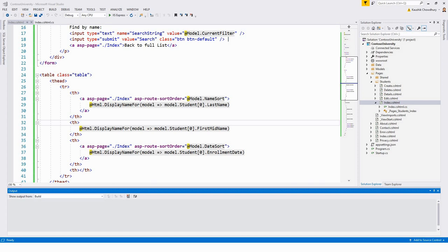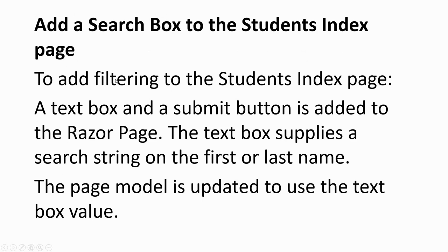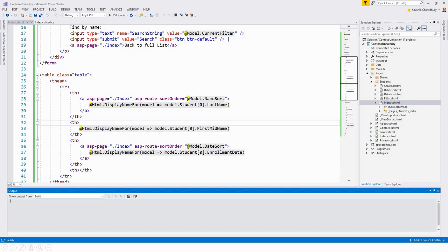Next we'll add a search box to the student index page. To add filtering, a text box and a submit button must be added to the Razor page. The text box allows entering a search string on the first or last name, and the page model is updated to use the text box value.